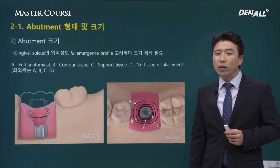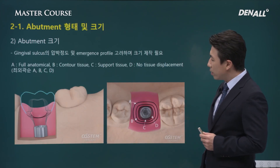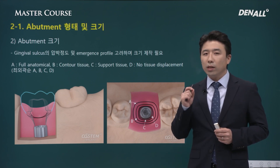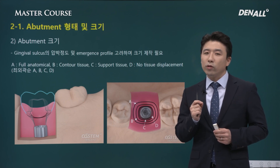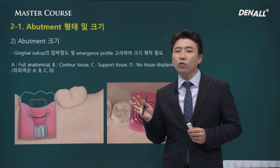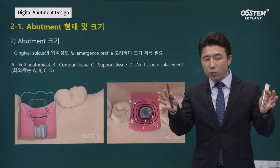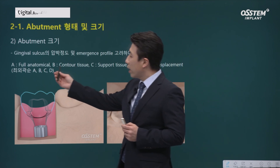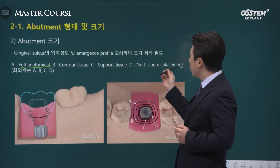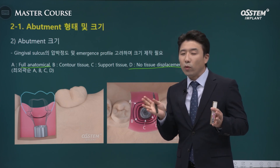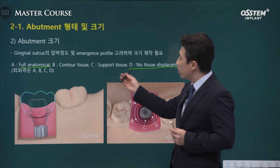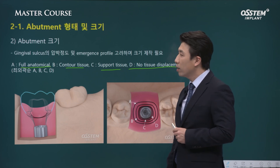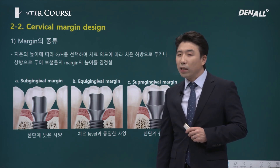Next, I want to talk about abutment size. In the posterior area, various results can be achieved. Some people think that the crown profile does not necessarily have to be similar to natural teeth, and there are different opinions on this. There are options — labeled A through D. Option A involves providing the same contour anatomically, and option D involves no tissue displacement with no major changes from the healing abutment size. In the posterior area, everyone has slightly different opinions, and we need to provide contour as necessary depending on the situation.